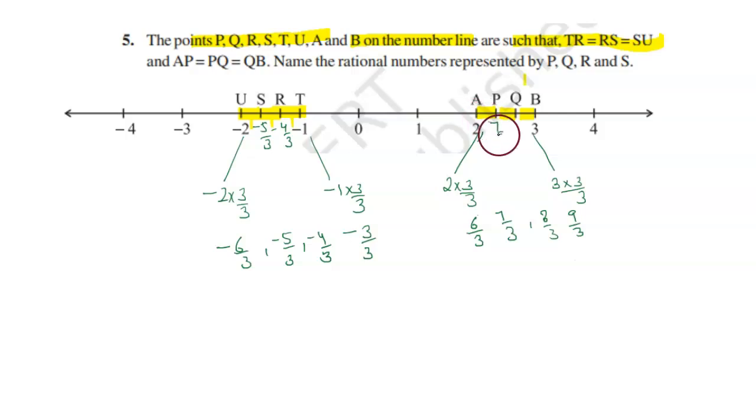So P is 7 upon 3 and Q is 8 upon 3. Therefore, S equals minus 5 upon 3, R equals minus 4 upon 3, P equals 7 upon 3, and Q equals 8 upon 3. Thank you.